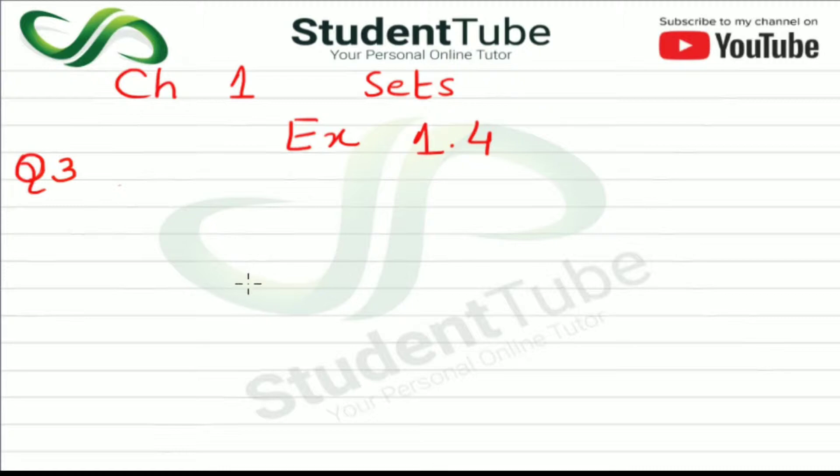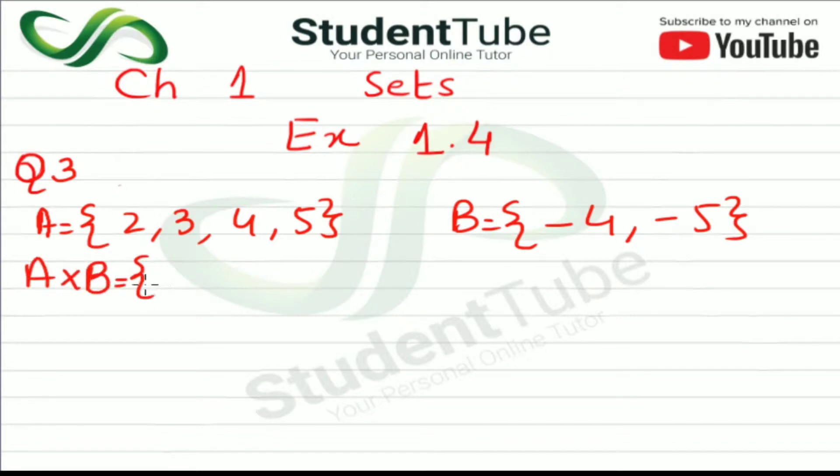So first let's write set A. Set A is 2, 3, 4, and 5. And B set is -5 and -4.